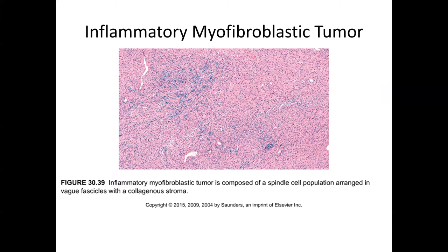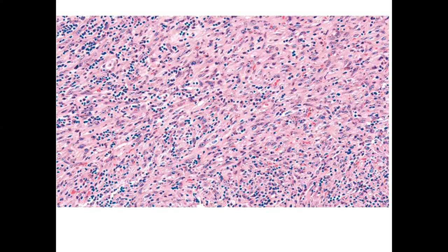In the differential with intra-abdominal desmoid is inflammatory myofibroblastic tumor, which tends to have more inflammatory component but may also have a spindle cell process. It tends to be a bit more eosinophilic and a little more fibrotic than fibromatosis. You can see the mixed character of the inflammatory process along with the spindle cell characteristics. Many of these tumors would be positive for ALK protein on immunohistochemistry, and you might also see myofibroblastic markers like desmin or smooth muscle actin.